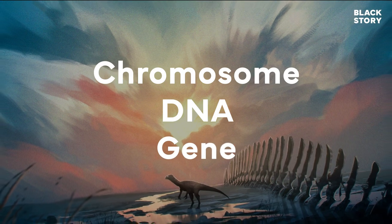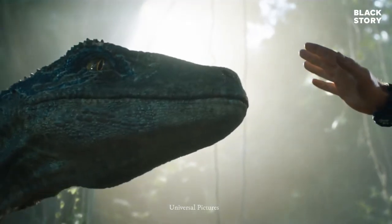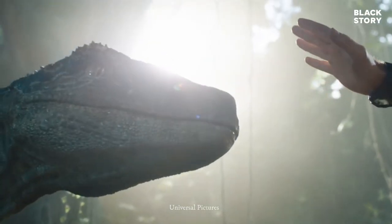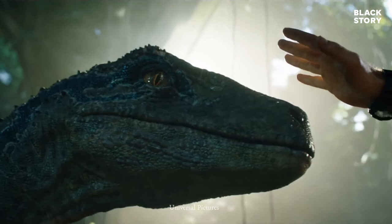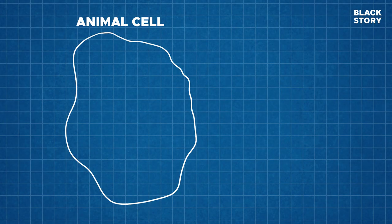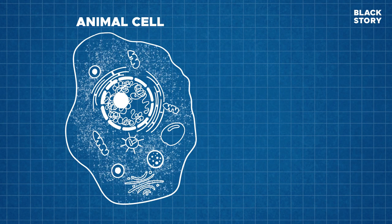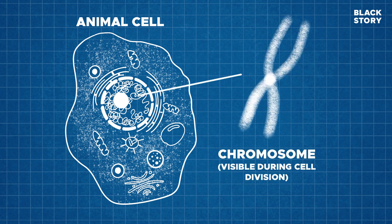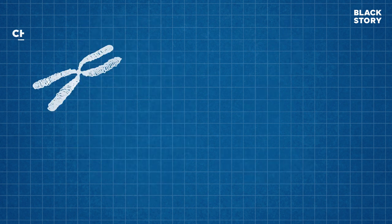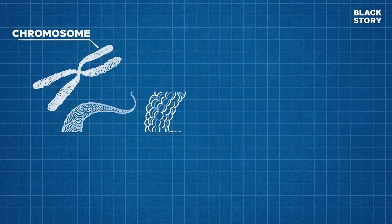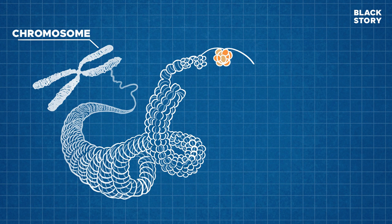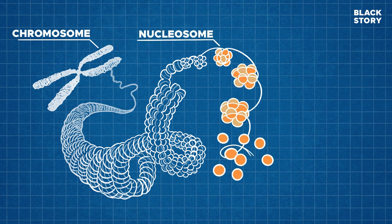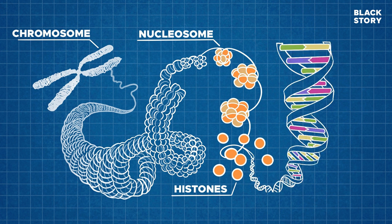Chromosomes, DNA, and genes are the basic terms of genetics. We should understand these terminologies before we dive into the dinosaurs. The cell is the basic structural and functional unit of all organisms. Chromosomes are thread-like structures found inside the plant and animal cell nucleus. The unique structure of chromosomes keeps DNA wrapped around a protein called histones. Without this kind of packaging, DNA would be too long to fit into a cell.